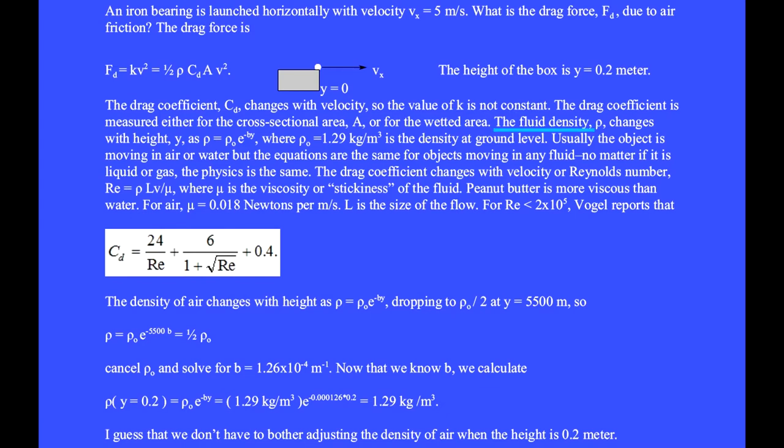The fluid density rho changes with height y as rho equals rho 0 e to the minus by where rho 0 equals 1.29 kg per cubic meter is the density at ground level. Usually the object is moving in air or water but the equations are the same for objects moving in any fluid no matter if it is a liquid or gas.